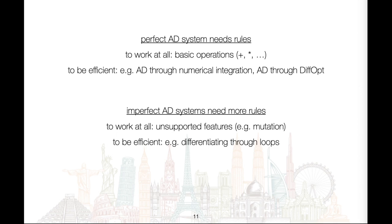However, we don't actually have a perfect AD system in Julia, and imperfect AD systems need even more rules — again, to work at all, meaning the rule works around unsupported features, and to be more efficient, meaning a rule can work around a function that would be very slow to autodiff through otherwise.